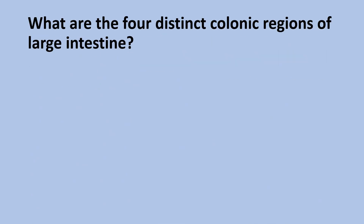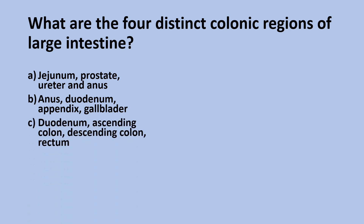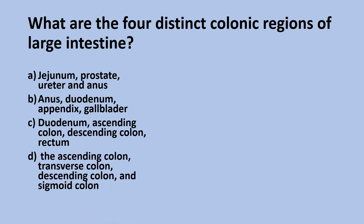Next question: what are the four distinct colonic regions of the large intestine? Is it the jejunum, prostate, ureter, and anus? Is it the anus, duodenum, appendix, and gallbladder? Is it the jejunum, ascending colon, descending colon, and rectum? Or is it the ascending colon, transverse colon, descending colon, and sigmoid colon?